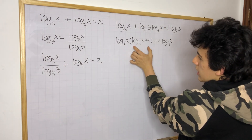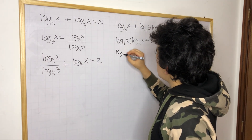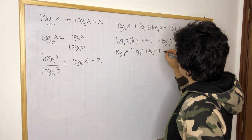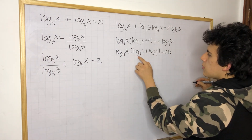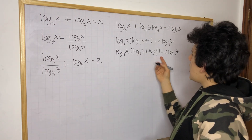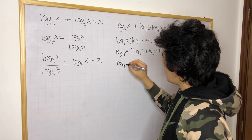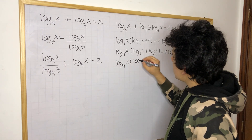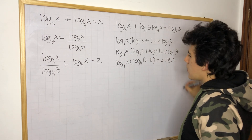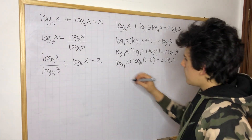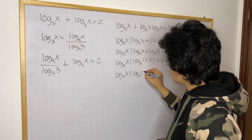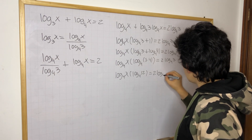Now we can simplify the parentheses to the following: log base 4 of x times log base 4 of 3 plus log base 4 of 4. Now the good thing here is that since we have the same base for the two logarithms, we can simplify this as a multiplication. So this is just simply a rule for logarithms. So we have log base 4 of x times log base 4 of 3 times 4, and this is equal to 2 times log base 4 of 3. Now we know this is going to be 12, so we continue: log base 4 of x times log base 4 of 12, and this is equal to 2 times log base 4 of 3.